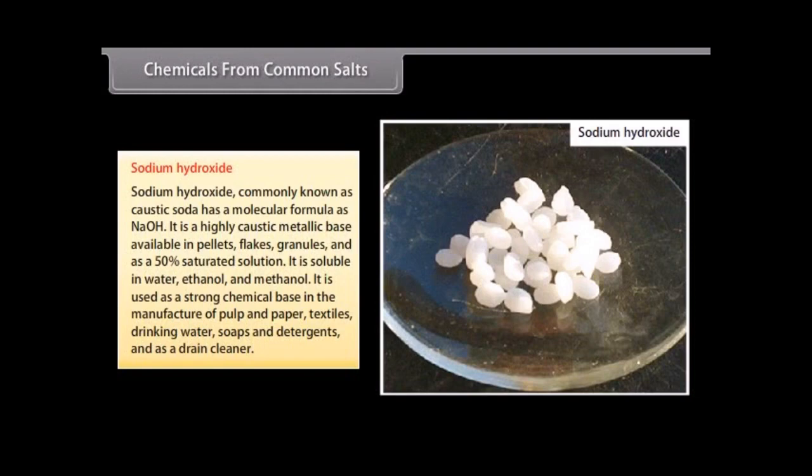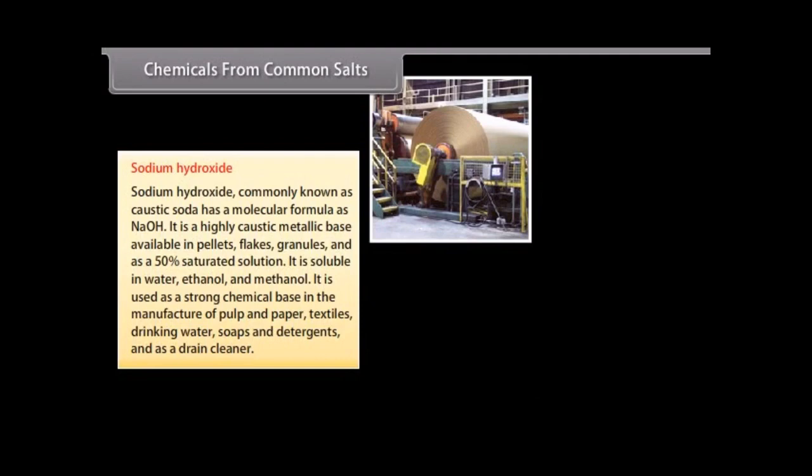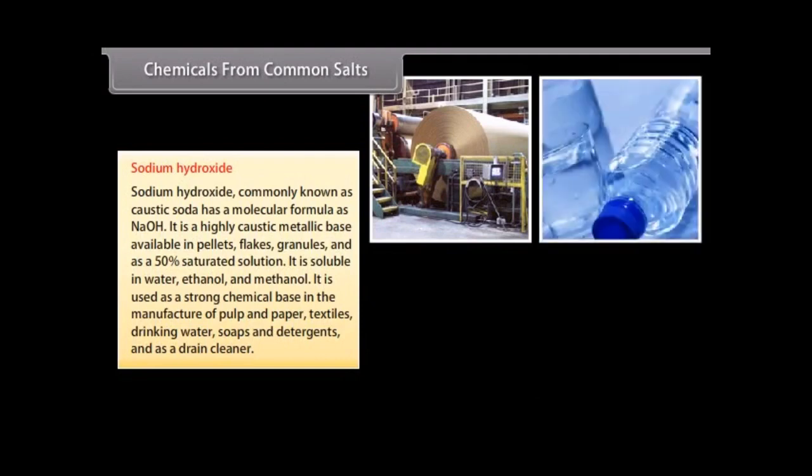Sodium hydroxide: Sodium hydroxide commonly known as caustic soda has a molecular formula as NaOH. It is a highly caustic metallic base available in pellets, flakes, granules and as a 50% saturated solution. It is soluble in water, ethanol and methanol. It is used as a strong chemical base in the manufacture of pulp and paper, textiles, drinking water, soaps and detergents and as a drain cleaner.